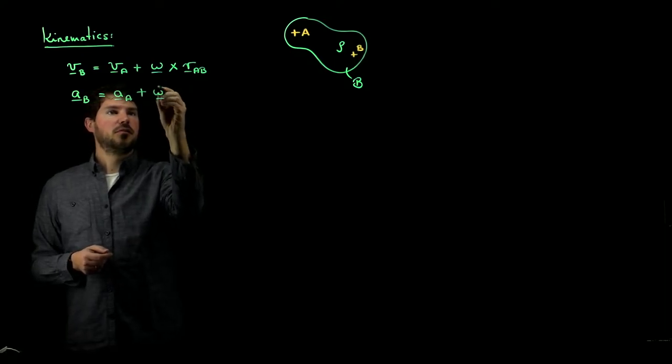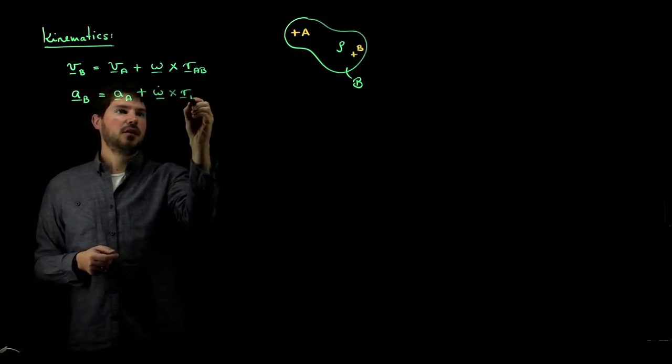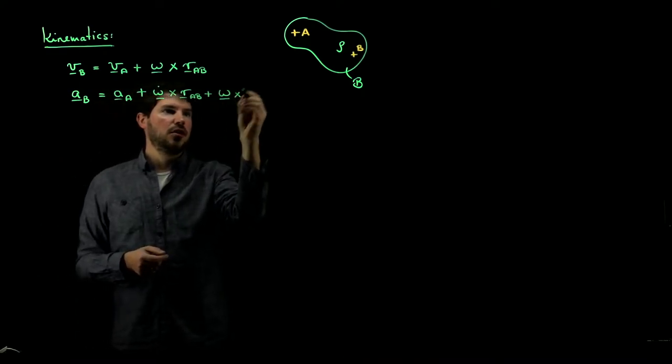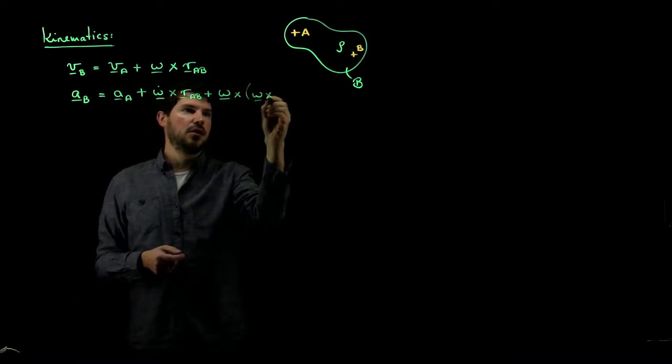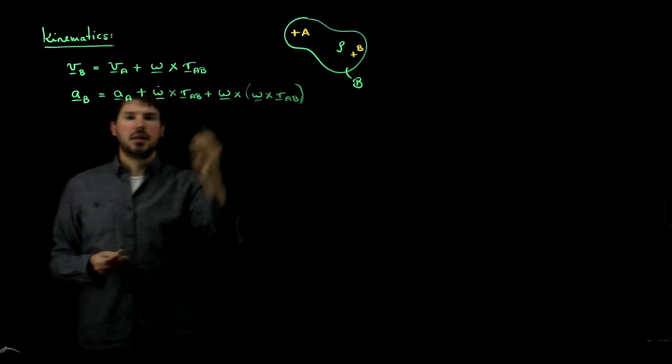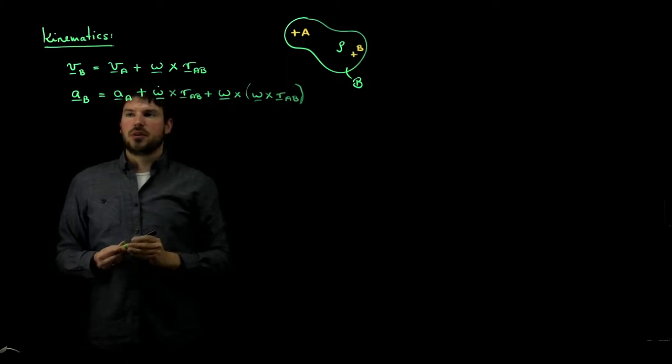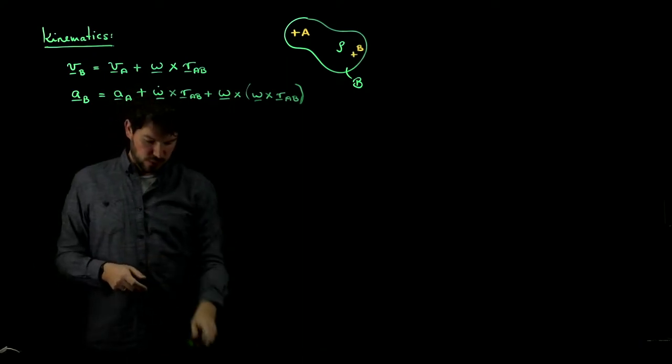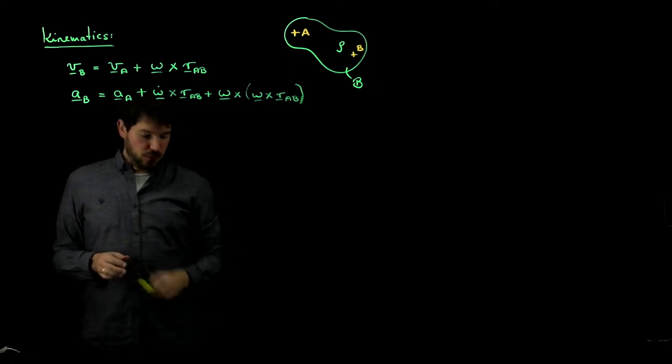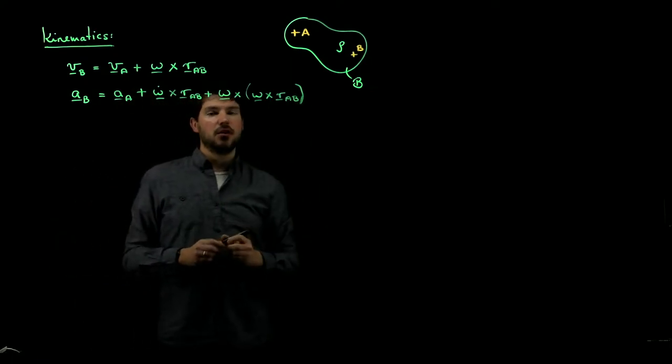what is the second term, which is omega cross omega cross RAB. Here we have two extra terms that come in and that allow us to relate the acceleration to two different points A and B. And this describes the motion of this rigid body over here.